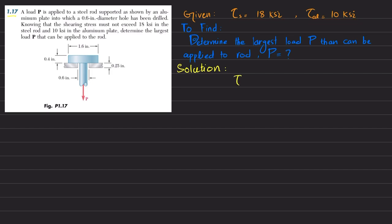We know that shearing stress is equal to shearing force per unit area. For the steel, if you look, the P load is applied. So this will be the shearing area, and this area will be equal to π D times thickness, which is 0.4 times T.